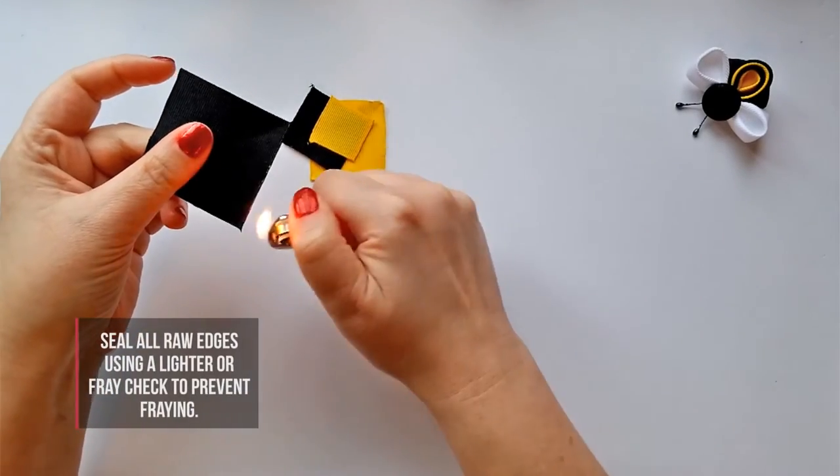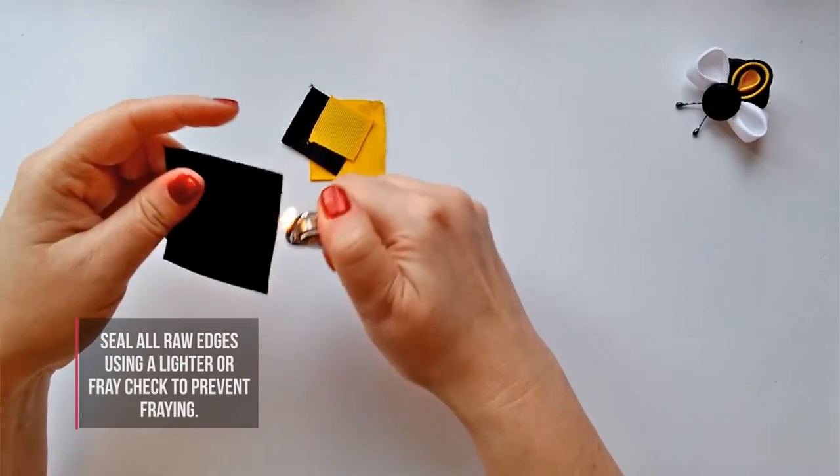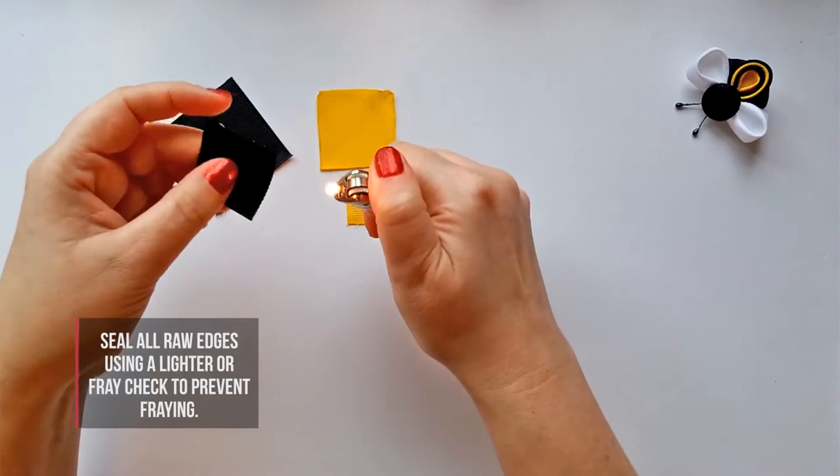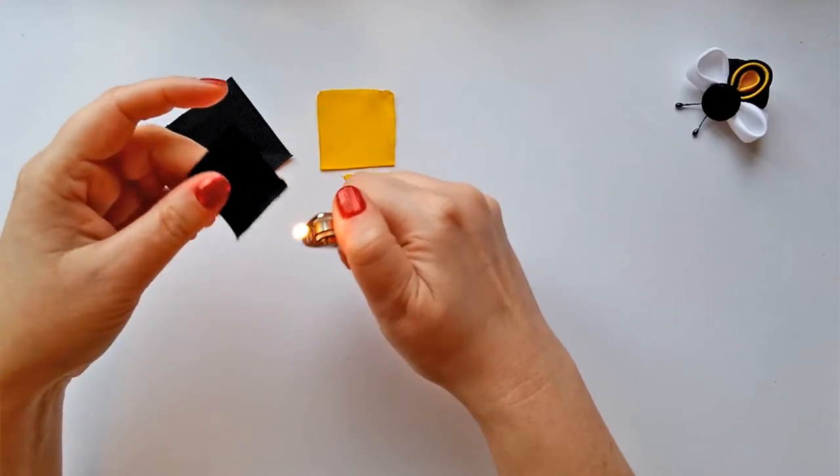Use fray check or a lighter to seal all of the raw edges where you've cut your ribbon, just to prevent them from fraying.